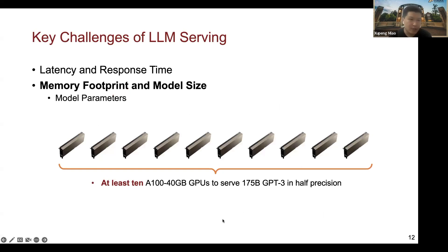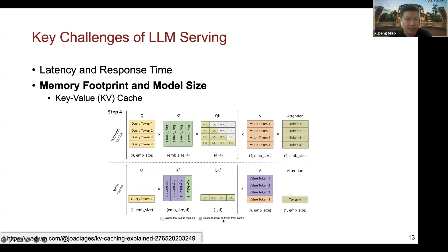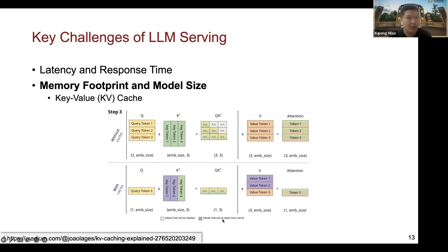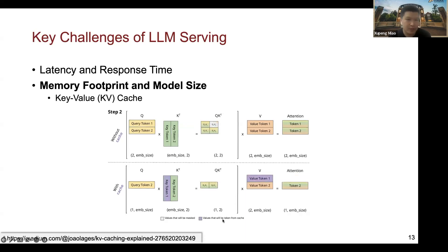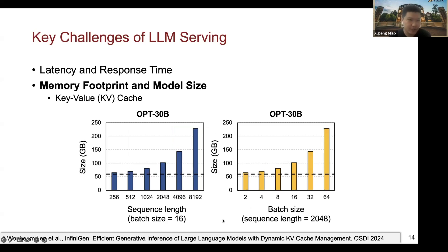The second challenge is memory footprint and model size. There are two key parts that consume a lot of GPU memory. One is the model parameters themselves — for example, serving a 175-billion GPT-3 model in half-precision requires at least 340 gigabytes of GPU memory. Another large part is the key-value cache, used to avoid recomputation of previously generated tokens. For long input sequences, the KV cache can also dominate GPU memory consumption.